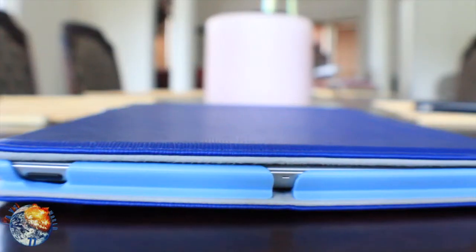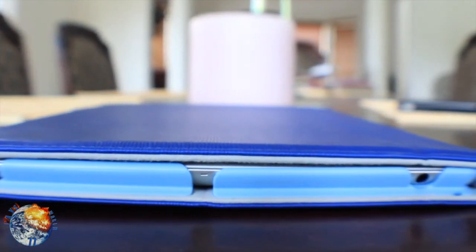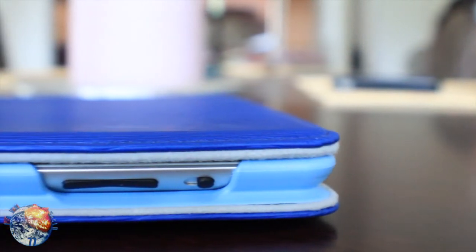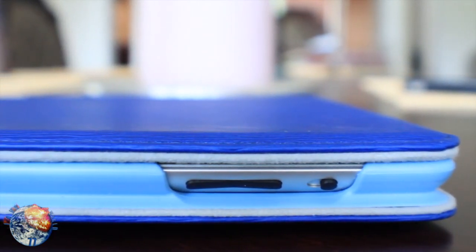Let's take a look at the cutouts. On the top, you have a nice cutout here for your headphone jack, your mic, and your sleep and wake button. On the side, you have a cutout for your orientation lock and also for your volume up and down.